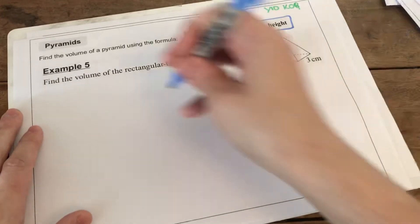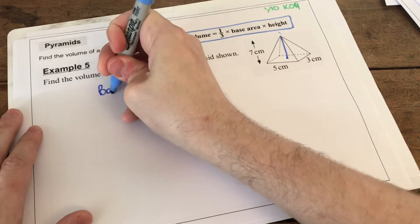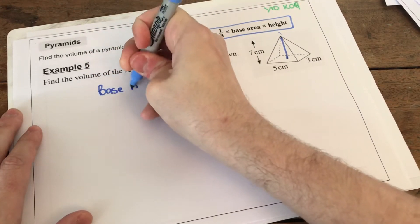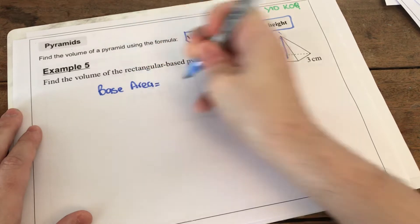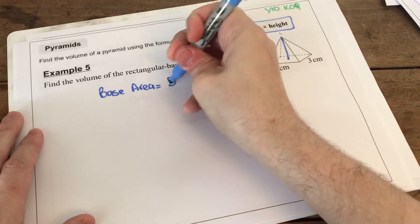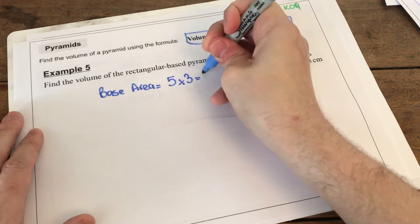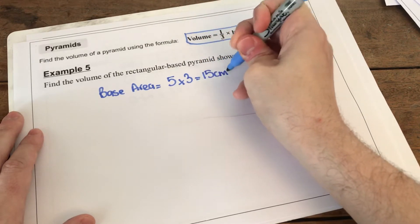To do this, very straightforward. We work out our base area first. Our base area of this shape is a rectangle, so we do 5 times 3 and that gives me 15 cm squared.